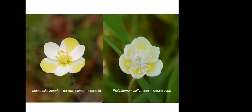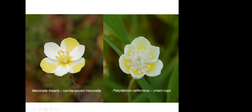Meconella versus Platystemon — meconella doesn't really have a common name; Platystemon is cream cups. They're white and yellow and can look superficially similar, but look at the inside, at the stamens: the pollen-holding anther in Platystemon is shaped like a thumb, whereas in cream cups they're shaped like little paddles inside the center. You really have to look down inside to tell them apart.